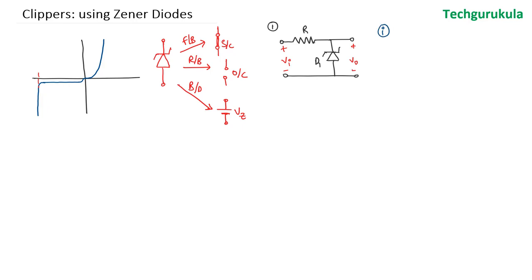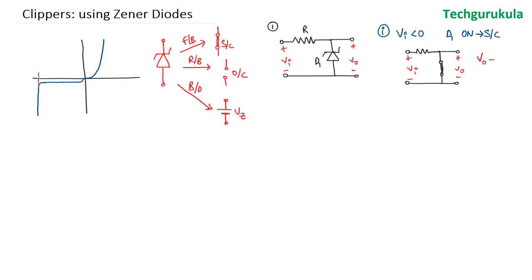First, when VI is less than 0, diode D1 would be forward biased and on. We can take this to be a short circuit, so the output voltage would be equal to 0 volts.